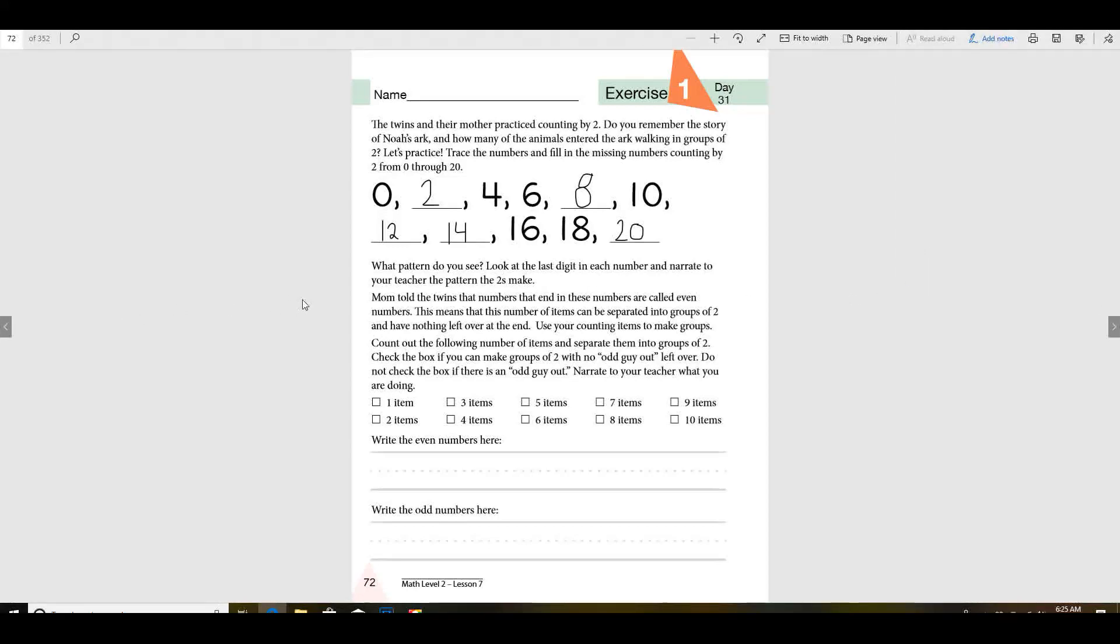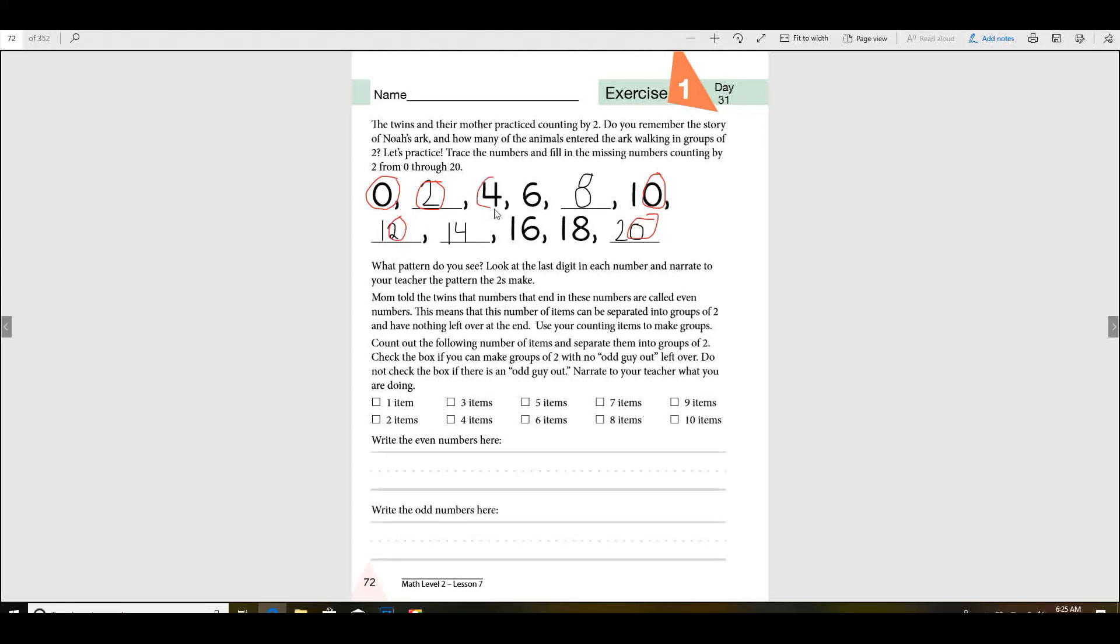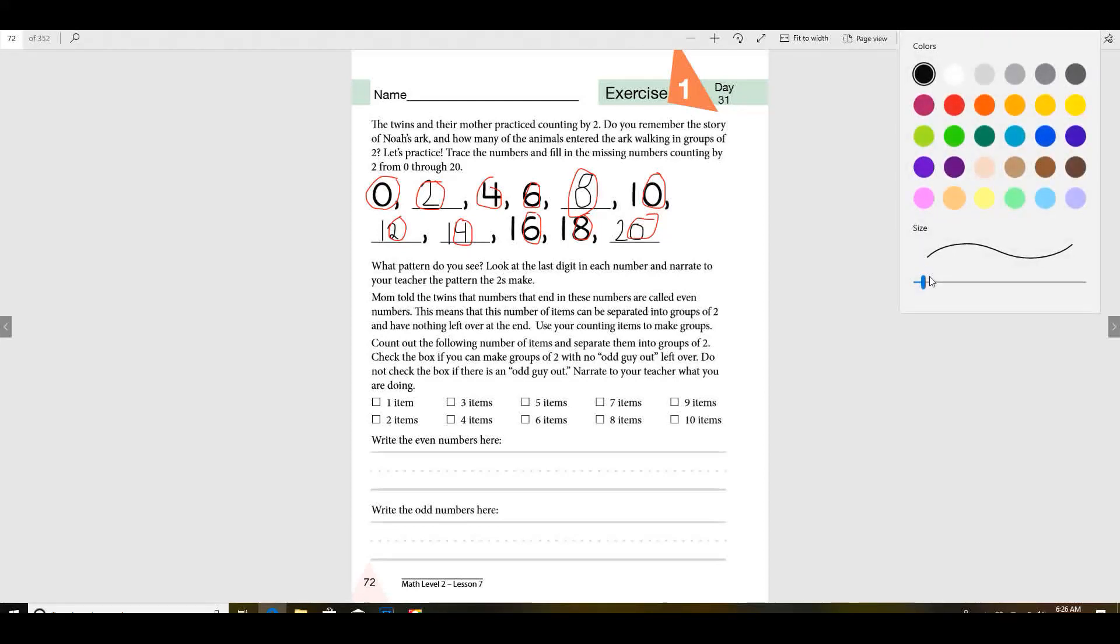What pattern do you see? Let me change colors and show you something. Let's see if you see a pattern now. I want you to notice this. Here's a zero, here's a zero, here's a zero. Here's a two, here's a two, here's a two. Here's a four, here's a four. Here's a six, here's a six. Here's an eight and here's an eight. You notice that? All right, it says do you notice a pattern, and there is a pattern when you're counting by twos. Now look at the last digit in each number and narrate to your teacher the pattern the twos make.